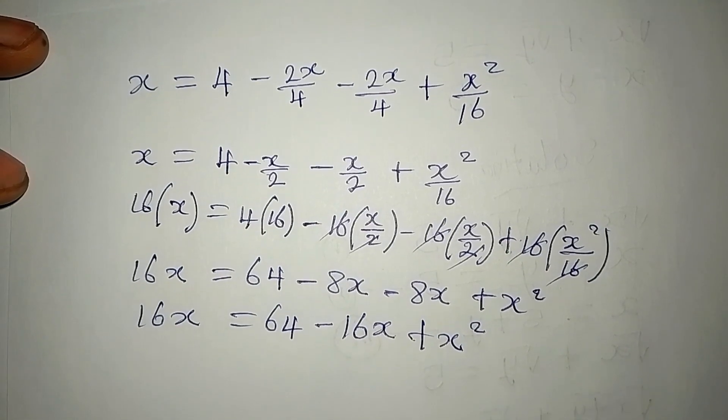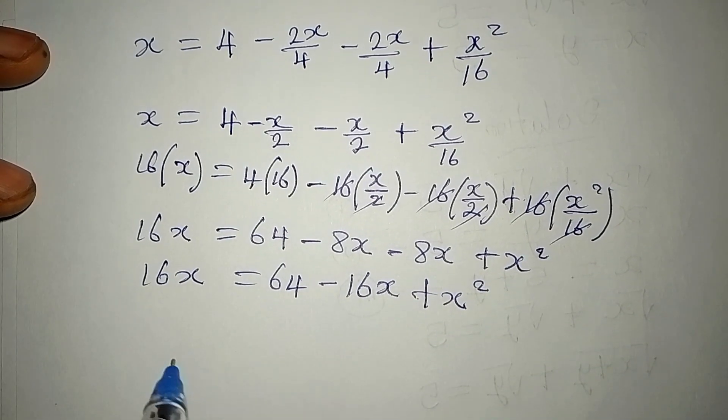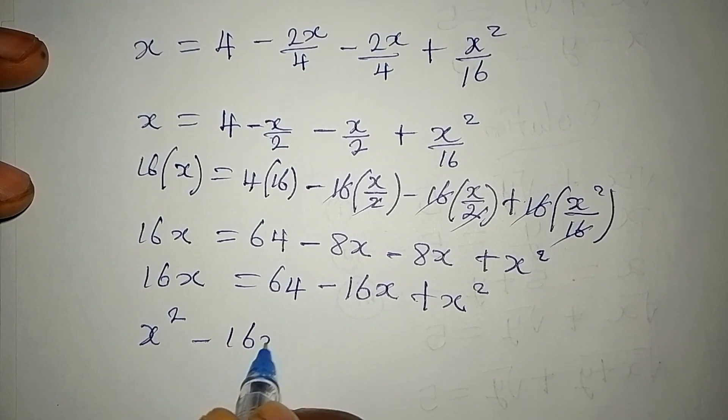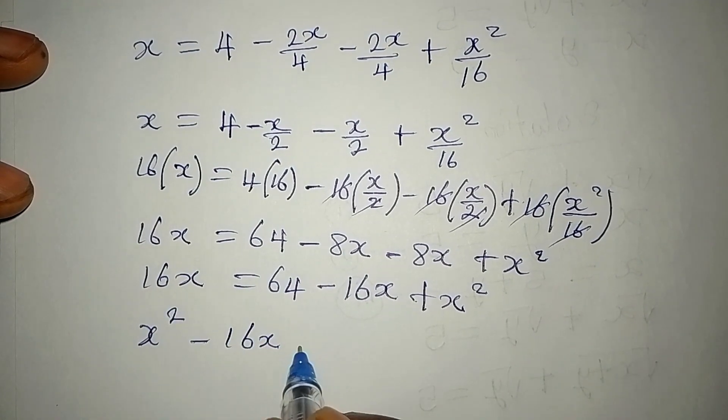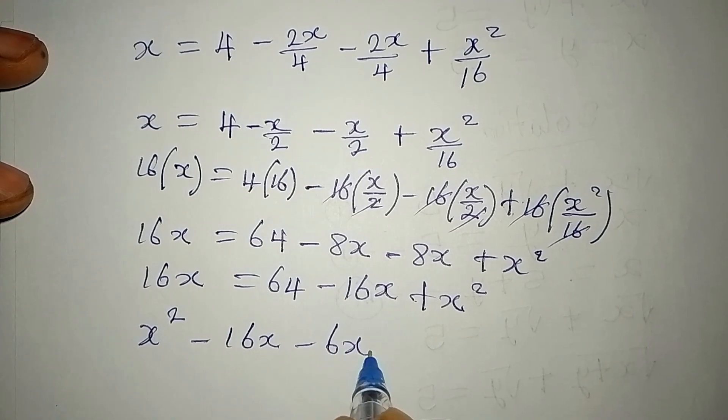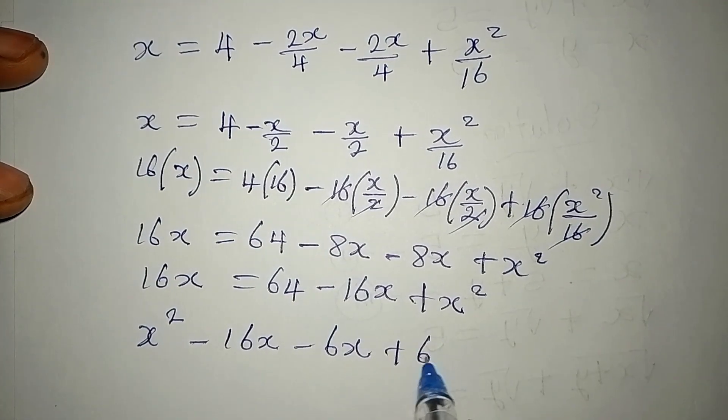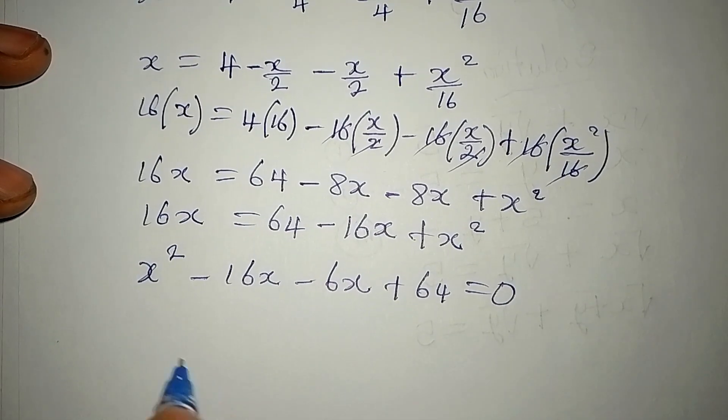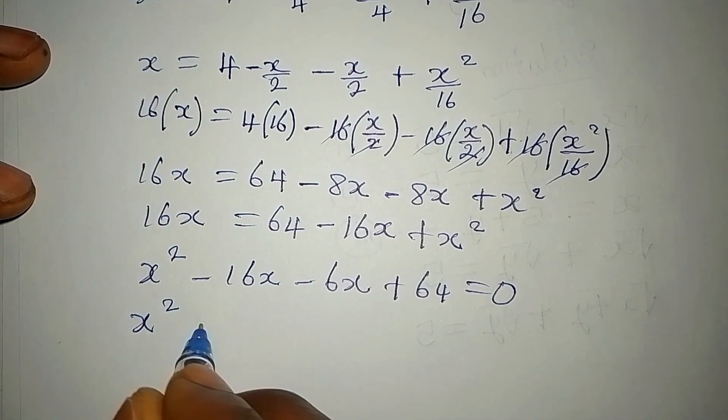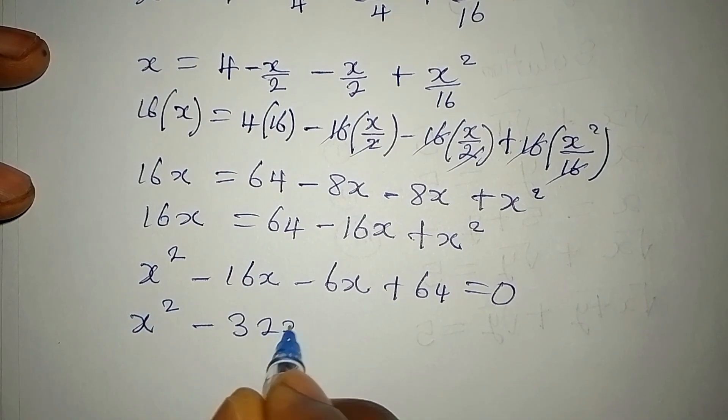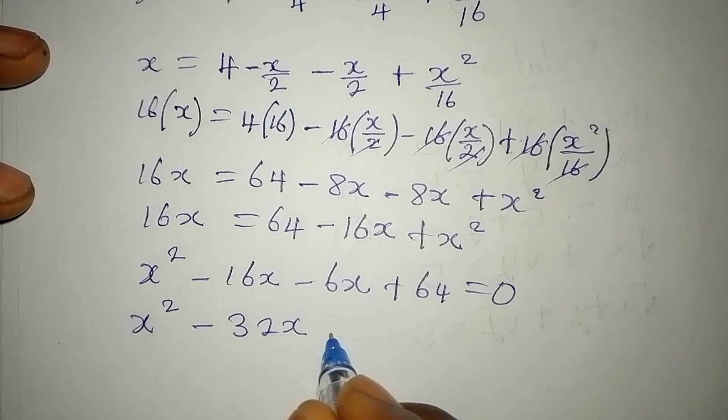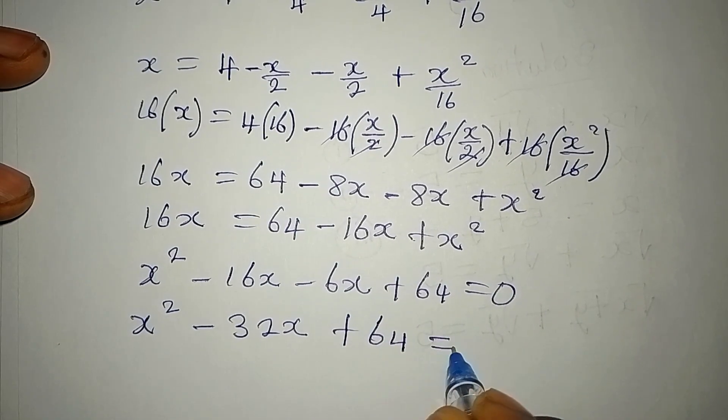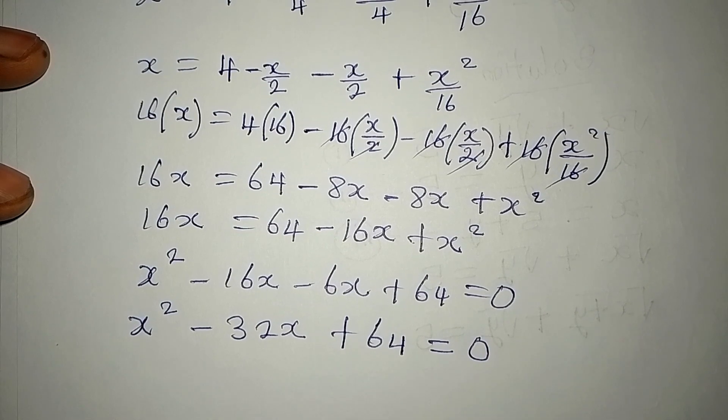Now let's collect like terms. I want to write x² first, then I write -16x, this becomes -16x, and this is +64, everything equal to 0. Now x² - 32x + 64 is equal to 0.